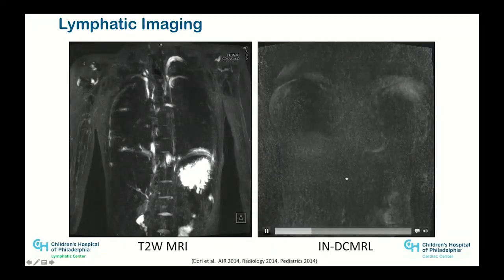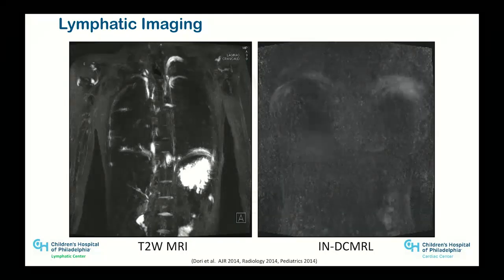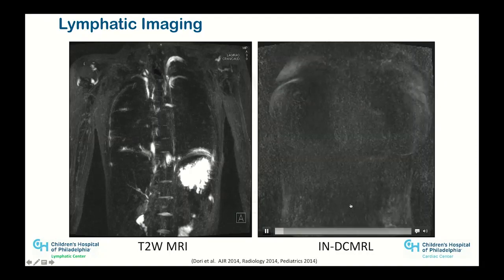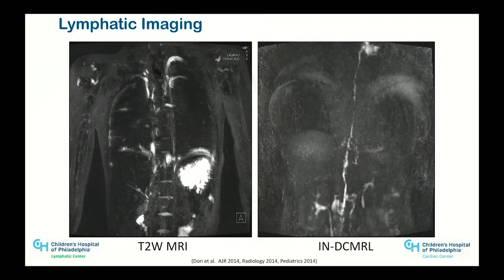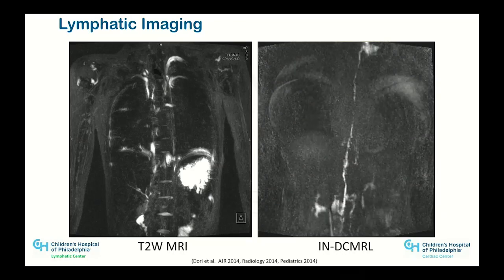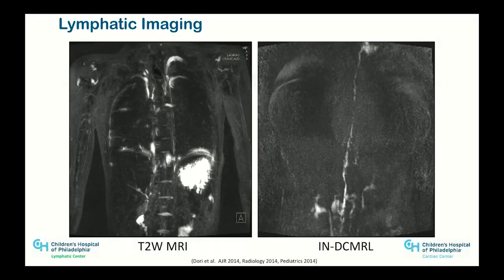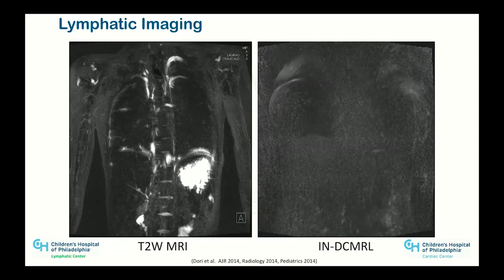Normal intranodal lymphangiography uses T2 imaging — T2 just looks at water, and lymphatic channels have slow-moving water so T2 can show a lot. In intranodal lymphangiography we inject MRI contrast agent into the nodes and the thoracic duct lights up. This technique has opened the world for looking at lymphatic flow disorders. Just understanding anatomy isn't enough — you need to see flow, anatomy, and measure lymphodynamics to understand what is going on.